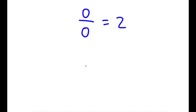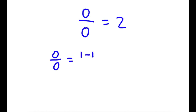I'm going to be proving that 0 divided by 0 is equal to 2. To do this, I'm going to first start with 0 divided by 0. This is the same thing as 1 minus 1 over 1 minus 1, because 1 minus 1 is 0, so 0 over 0 equals 1 minus 1 over 1 minus 1.